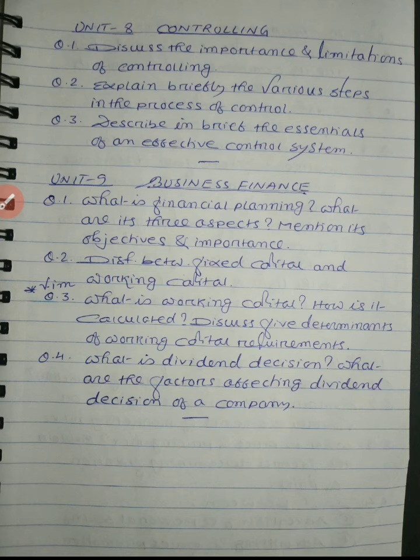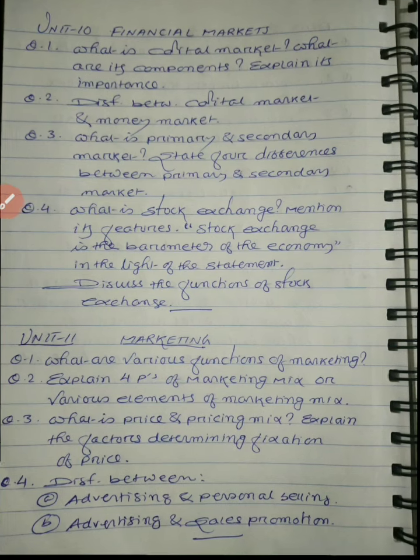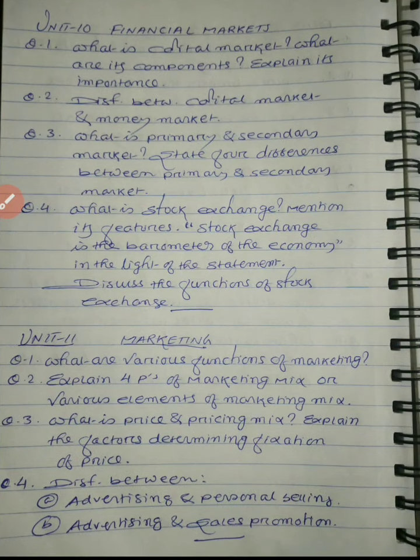Then unit number nine: Business Finance — four questions given, but question number three is the most important question from this unit. Especially the third part of question three: 'Discuss the five determinants of working capital requirements.' This is a very very important question — you must read it.